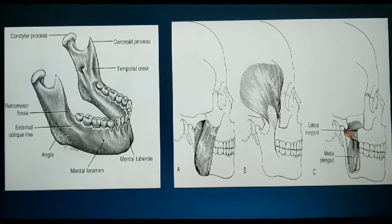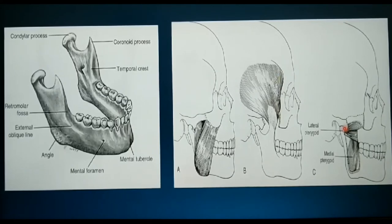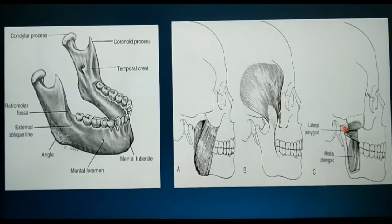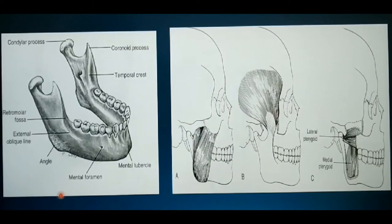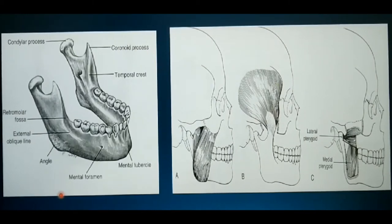A detailed description of condylar head anatomy as well as its fracture management shall be discussed separately in subsequent lectures. Now moving on to one of the most complicated regions of the mandible in terms of both anatomy and management — that is the angle.